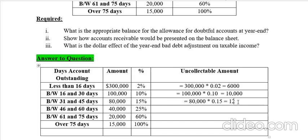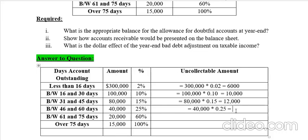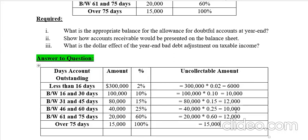Next, $40,000 times 25% equals $10,000. Then $20,000 in the second-last age group, with 60% expected uncollectable, gives $12,000. The last age group is $50,000, and we expect that all of this money cannot be recovered.